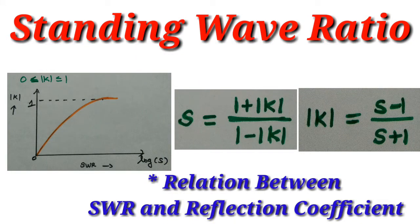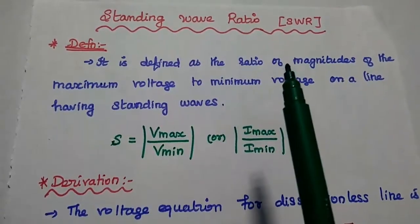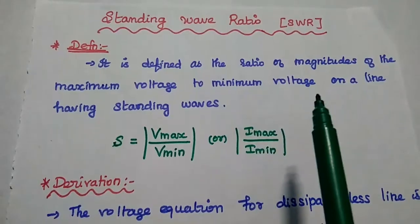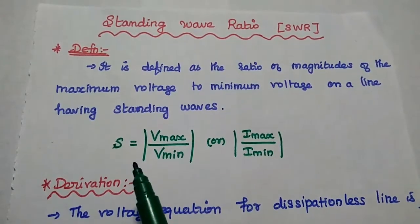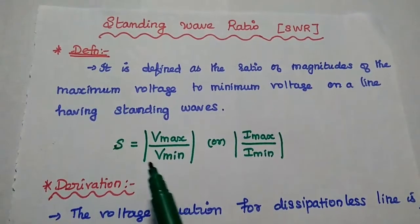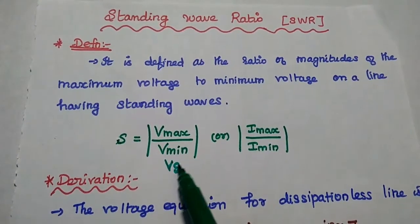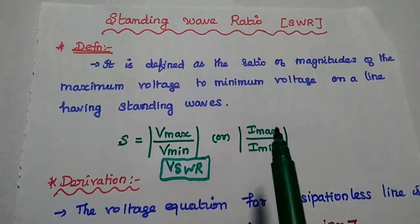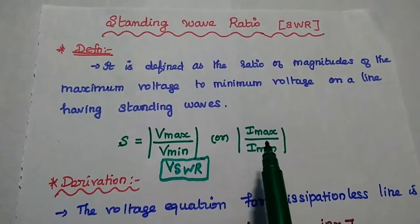Dear students, now we are going to discuss standing wave ratio and its relation with reflection coefficient. Standing wave ratio is defined as the ratio of the magnitudes of the maximum voltage to minimum voltage on a transmission line which is having the standing waves. It is represented as S, equal to the modulus of Vmax to Vmin. It is also known as VSWR, which means voltage standing wave ratio. It can also be represented using current terms, that is modulus of Imax to Imin.